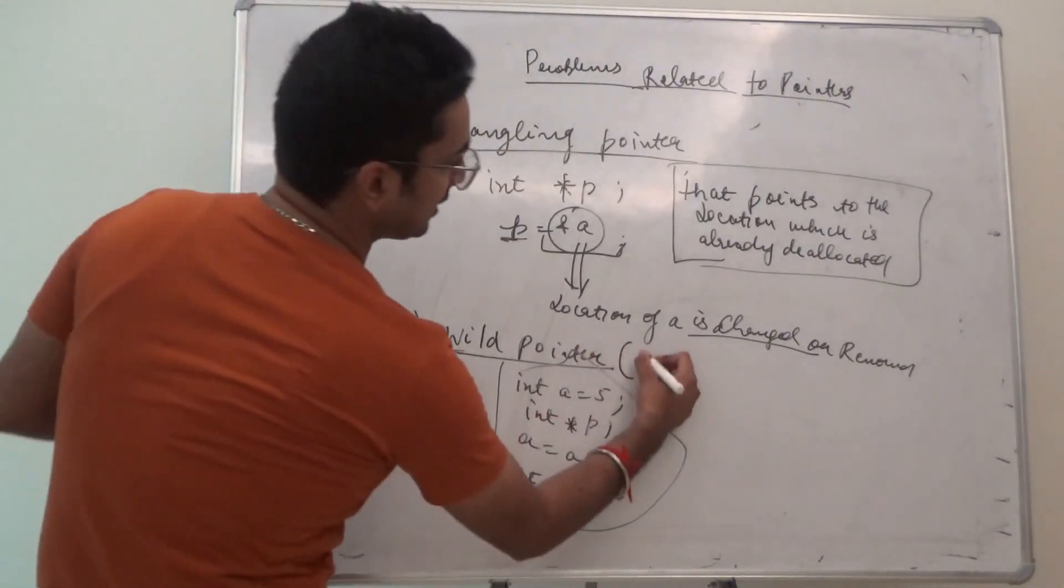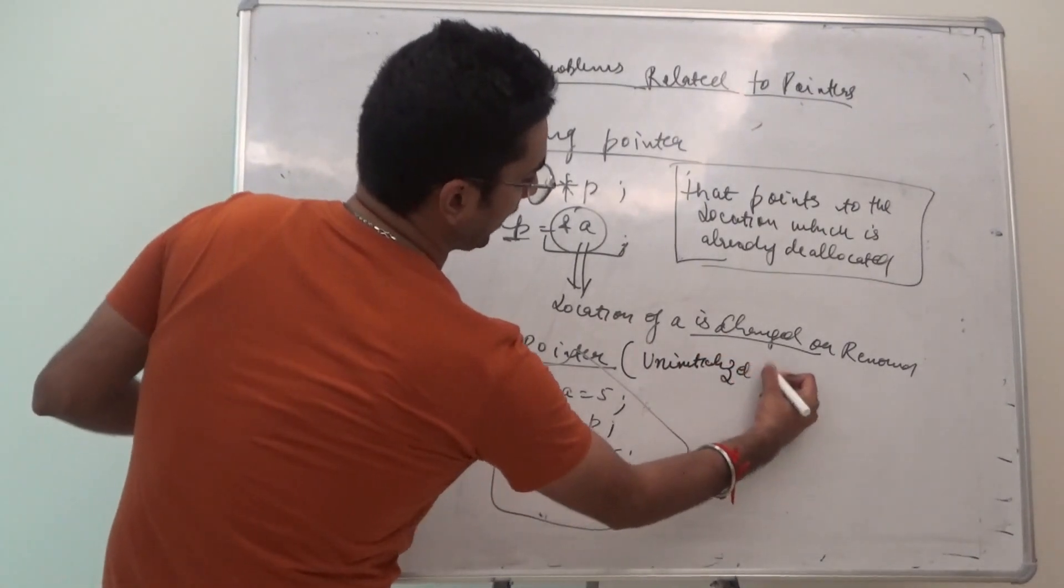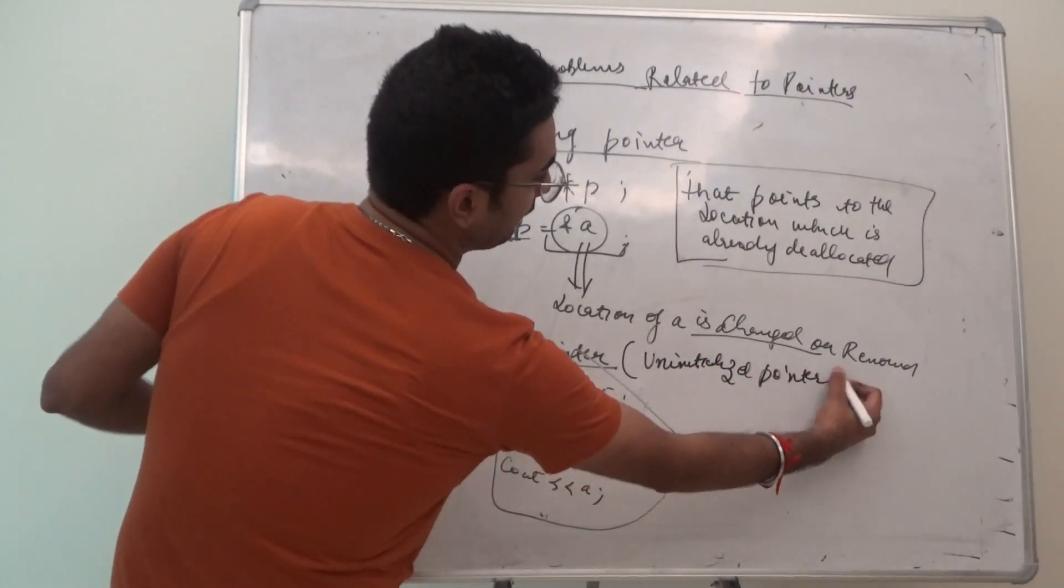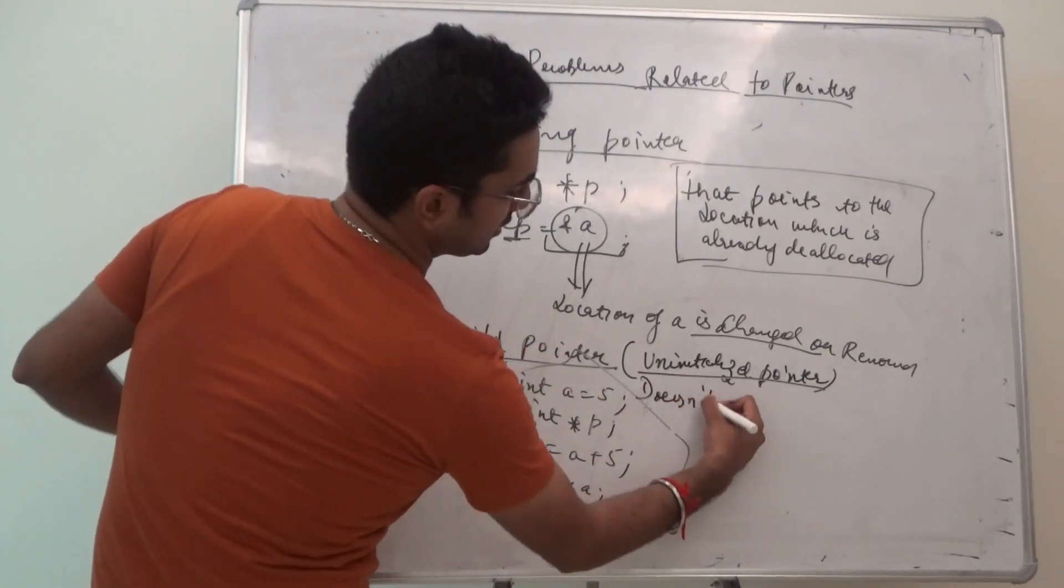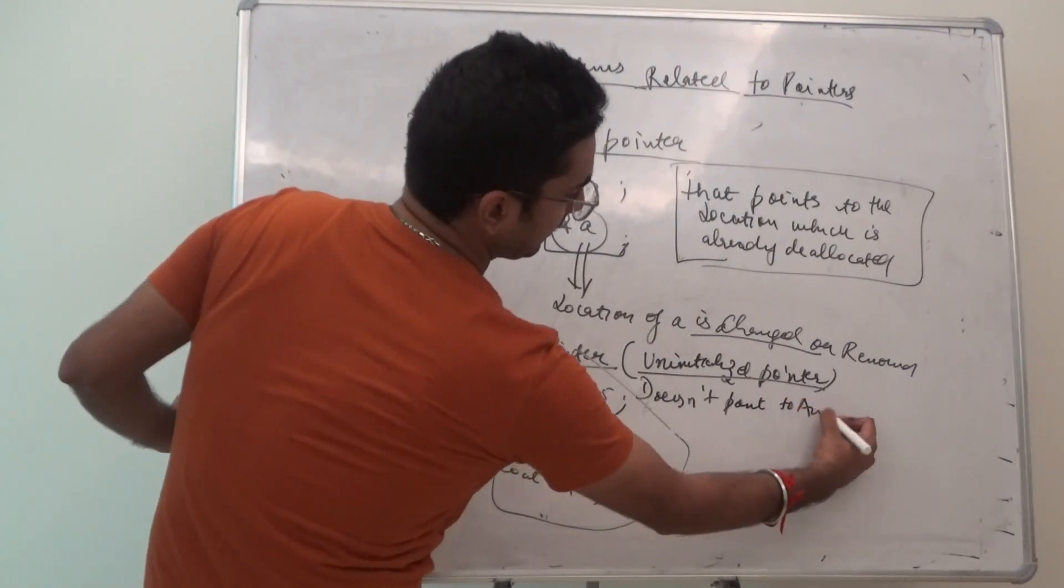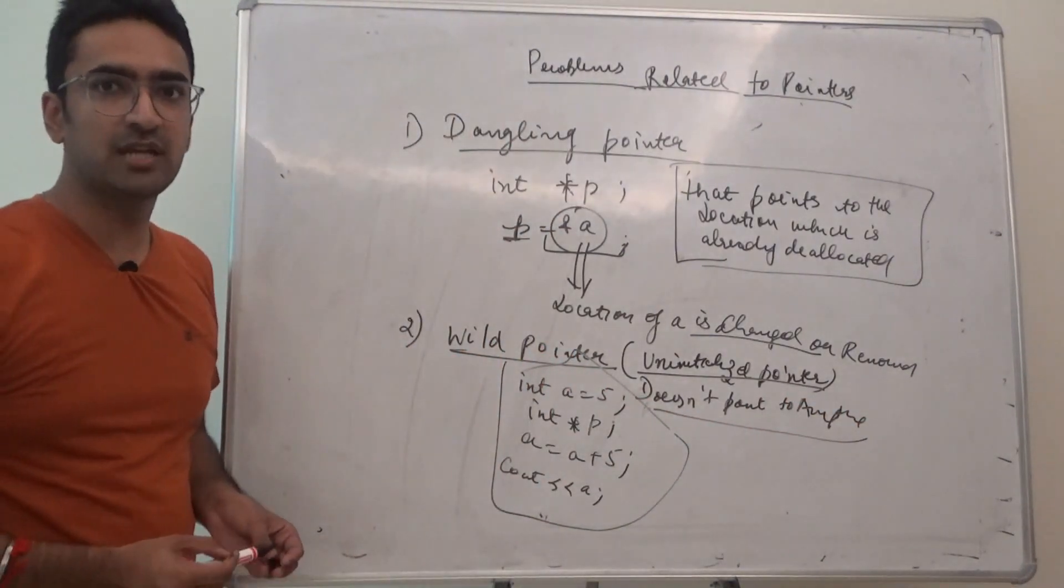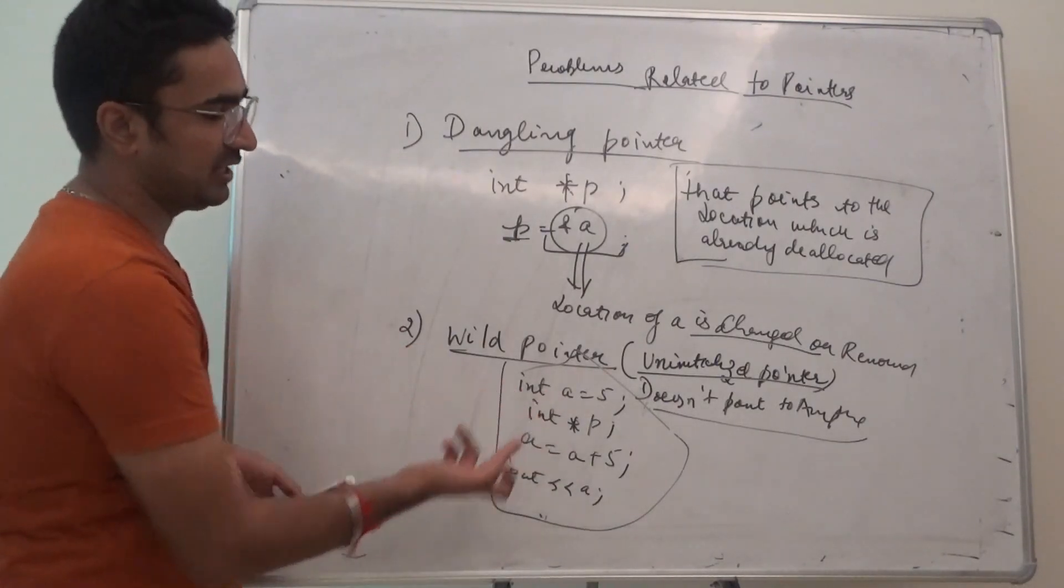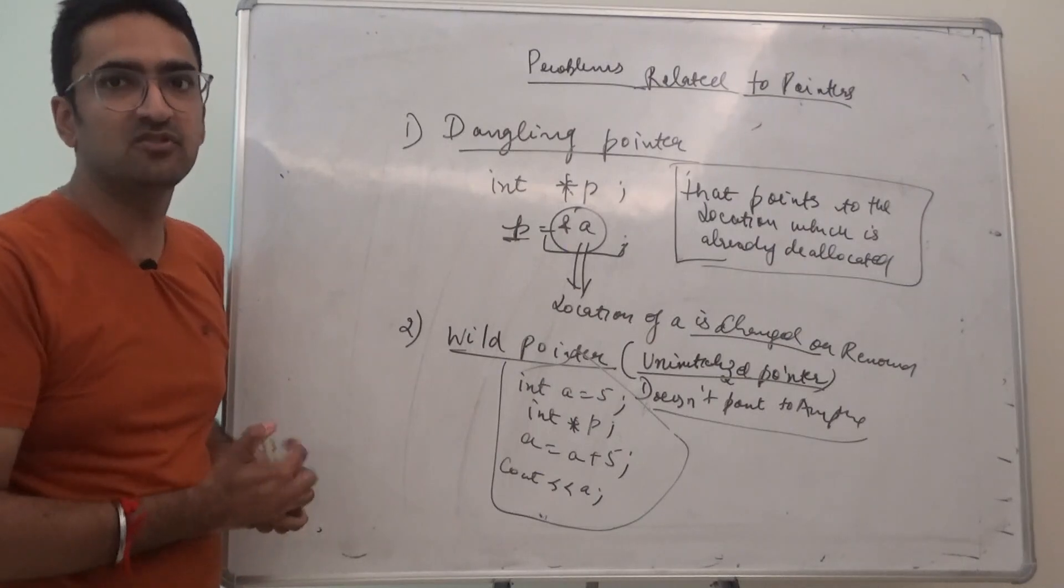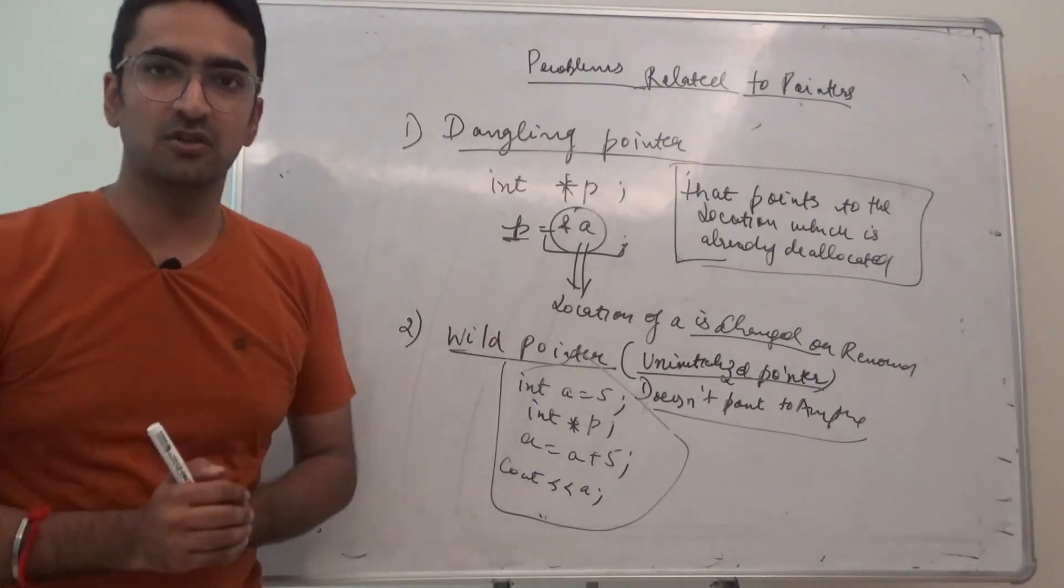A wild pointer is an uninitialized pointer which does not point to anything. It's just a waste of memory and it's also of no use. P is not initialized with the address of A and P is not doing anything. So these are the two disadvantages.